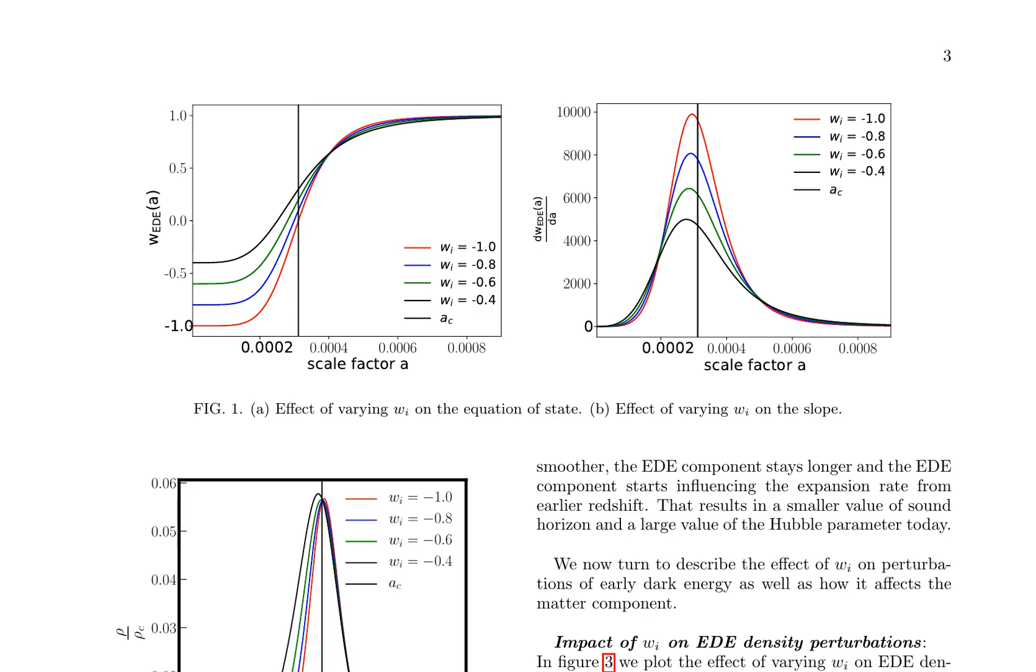The impact of varying the initial equation of state WI on early dark energy (EED) background and perturbation dynamics is explored. By modifying WI to negative 1.0, negative 0.8, negative 0.6, and negative 0.4, the authors demonstrate the effects on EED's background energy density and perturbations.